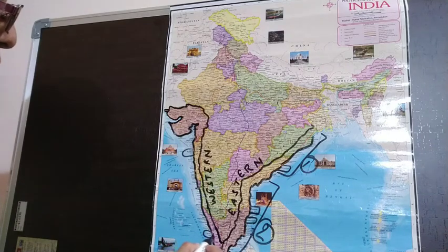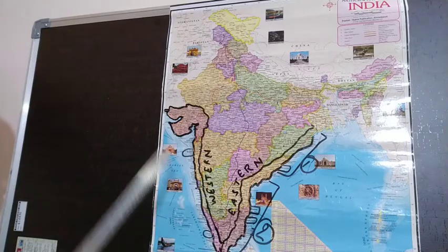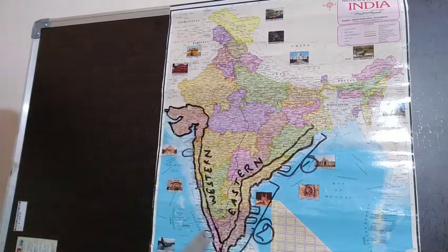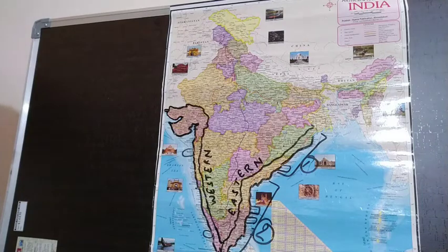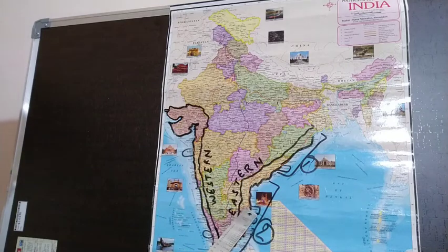Mumbai and Kochi are the main harbors. These seaports on both the coasts are important hubs for international trade. Both the western and eastern coastal plains have now been covered.